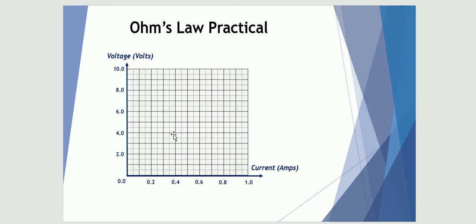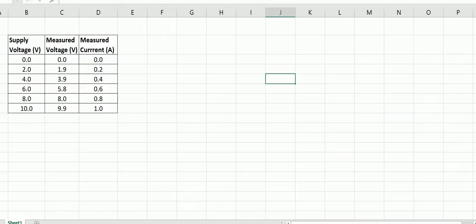We want to construct a graph of volts on the vertical and current on the horizontal axis. Now this is a little bit counterintuitive — traditionally the dependent variable would be the current depending upon the independent variable of voltage. However, for this particular investigation we're reversing our axes, so voltage goes on the vertical and current on the horizontal. Here's our data — let's see if we can insert a scatter plot.